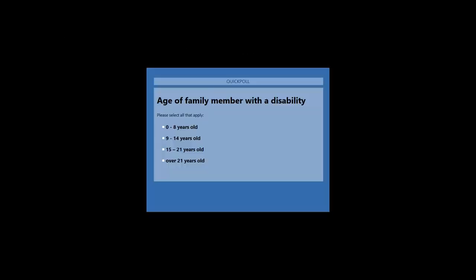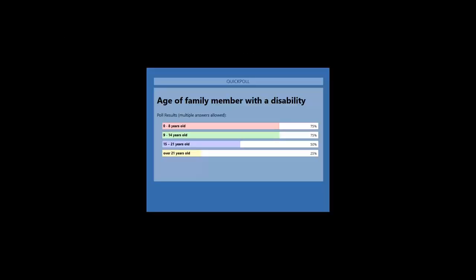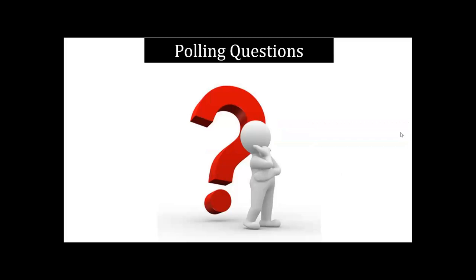The next question is: what is the age of the family member or person you're supporting? Are they 0 to 8 years old, 9 to 14, 15 to 21, or over 21? The results show 75% have children ages 0 to 8, 75% have 9 to 14 year olds, 50% have 15 to 21, and 25% have over 21 years of age. We have such a wonderful, diverse age group today, and Erin's information definitely covers all of these age groups.